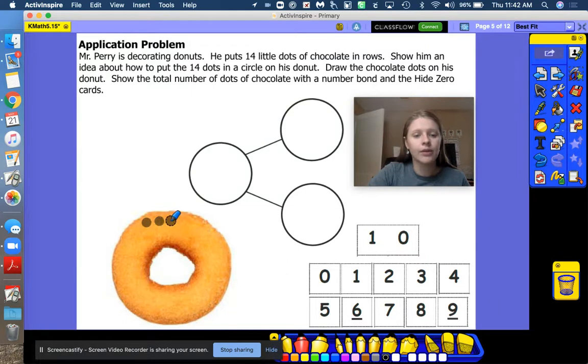One, two, three, four, five, six, seven, eight, nine, ten. Then he's going to add four to the bottom. Ten plus four makes fourteen. One, two, three, four.